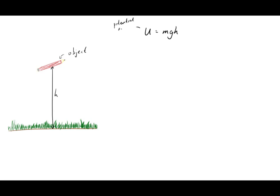Where u is the potential energy in joules, m is the mass of the object in kilograms, g is the gravitational acceleration on Earth in meters per second squared, and h is the height from which the object is dropped in meters.